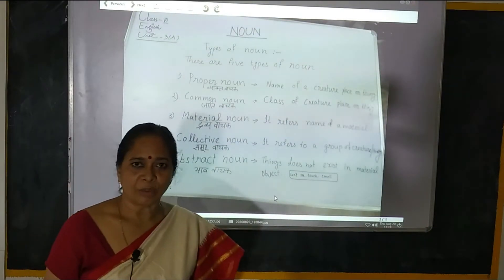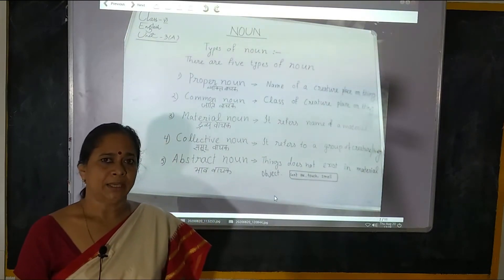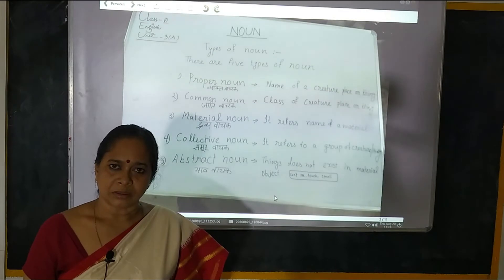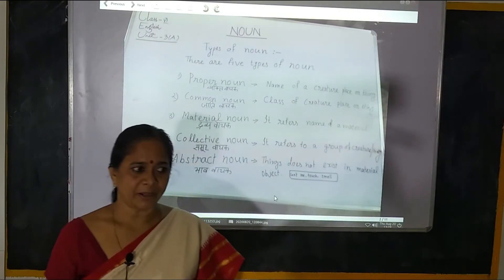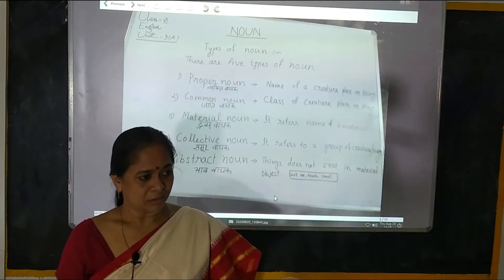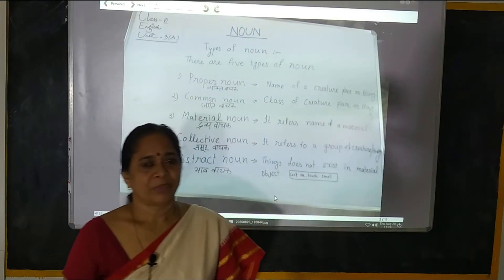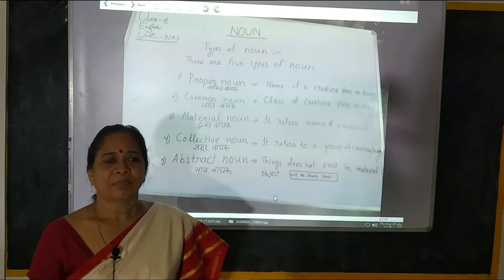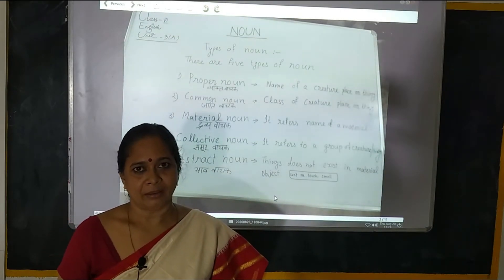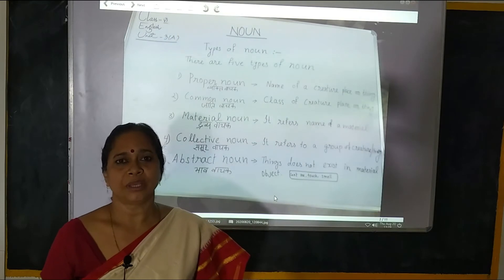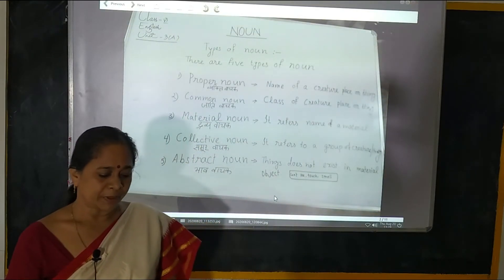Doosra hai Common Noun — jati vachat sanya. Jati, yani kisi jati ya varg ho. Maan lijiye yahan pe aap teen baithe hue ho — Ram, Sonu, Sandhi. Tieno ke common kya hai? Tieno boy hain. Ek ladke ki jati ko yeh represent kar raha hai, toh yahan Common Noun.